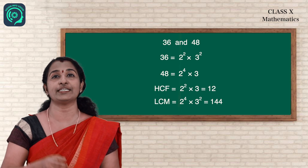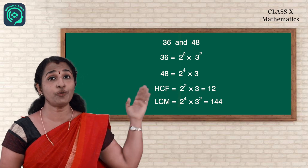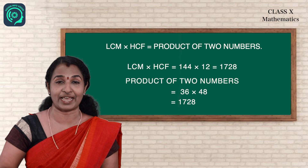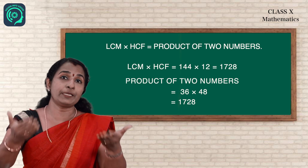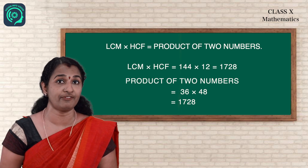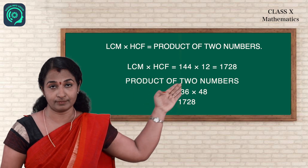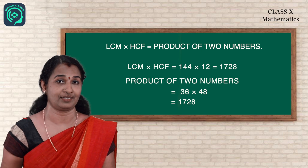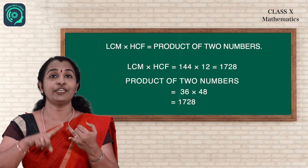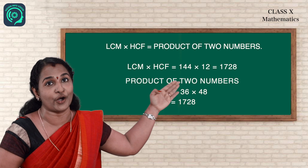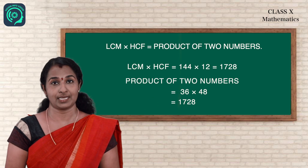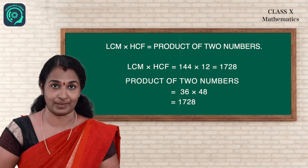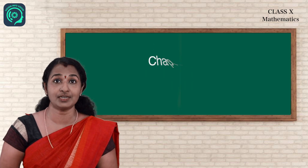Now there is an important result. When you multiply the LCM and HCF — that is 12 and 144 — you get 1728. If you also multiply the original given numbers 36 and 48, you get the same result: 1728. This clearly shows that LCM × HCF = product of the two numbers.